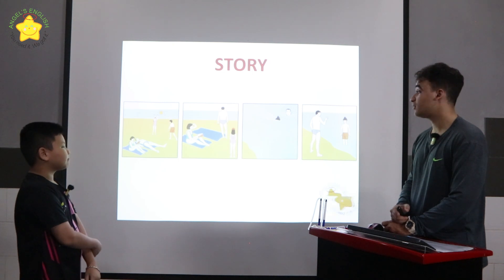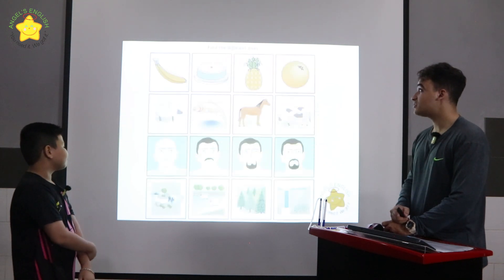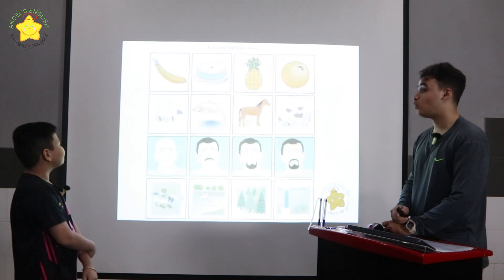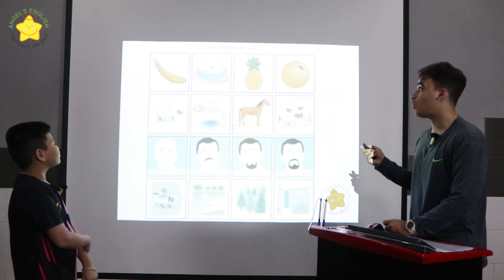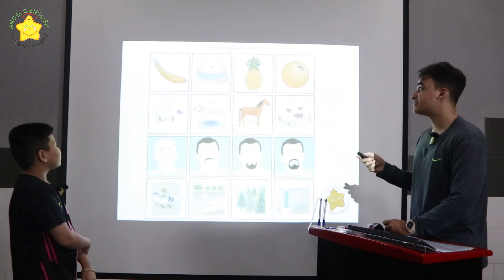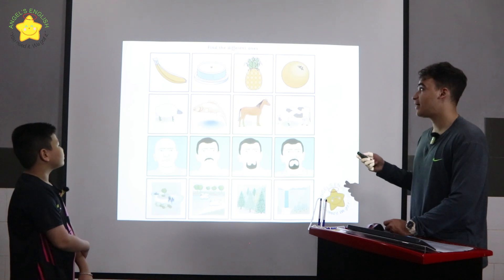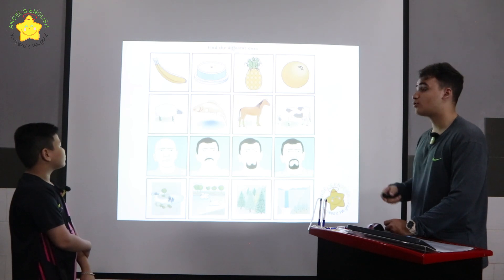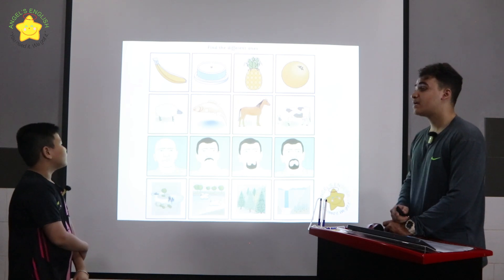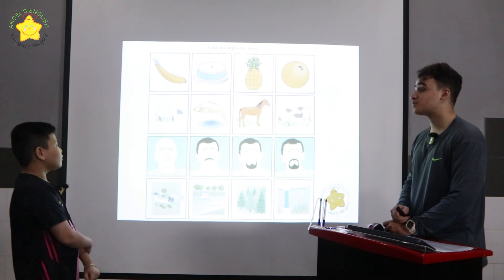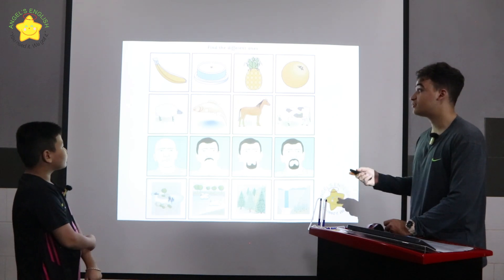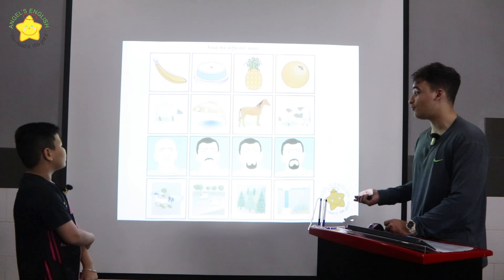Okay, very good. Now, this is called find the different ones. In row one, the cake is different because the banana, the pineapple, and the orange are all fruits. Can you please tell me which ones are different in rows two, three, and four?